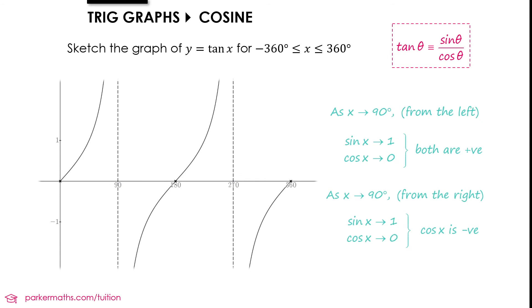That's the shape of our tan curve. What you might spot is that although sin and cos repeat every 360 degrees, we can see that tan repeats itself every 180 degrees. We could draw this graph beyond 360 repeating the same pattern.